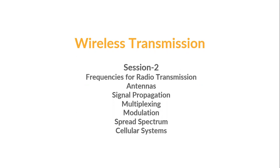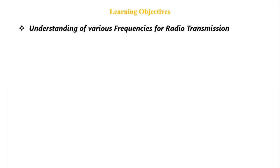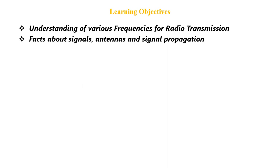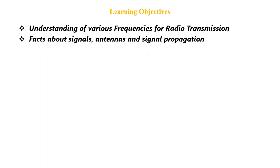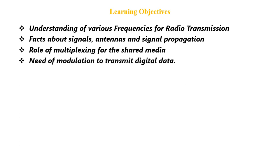Welcome to session two of the course Wireless Communication and Mobile Technology. The objective of this session is to introduce the various frequencies for radio transmission. After going through this session, students will be able to understand the various frequency bands available for radio transmission or wireless transmission, know the facts about signals, antennas, and signal propagation, and understand the role of multiplexing.